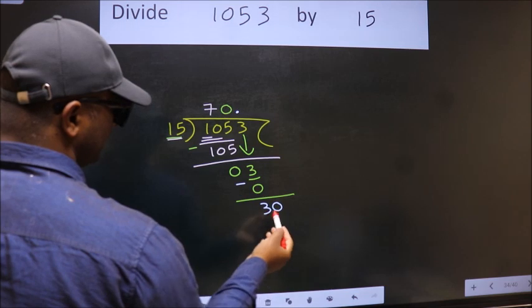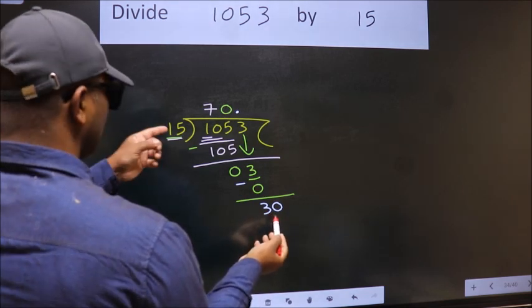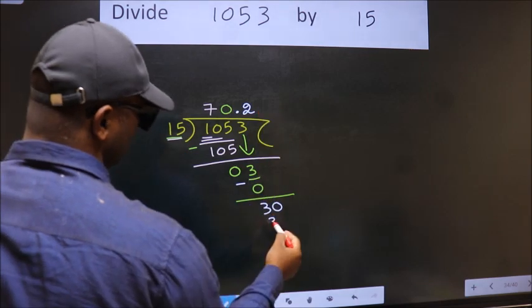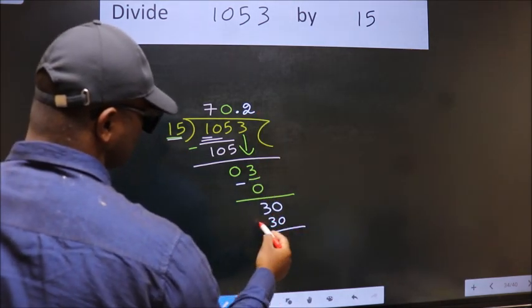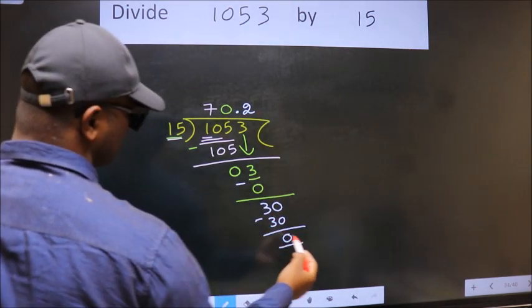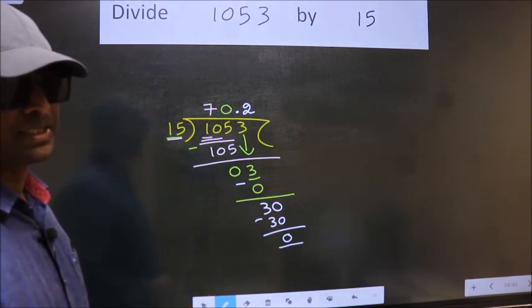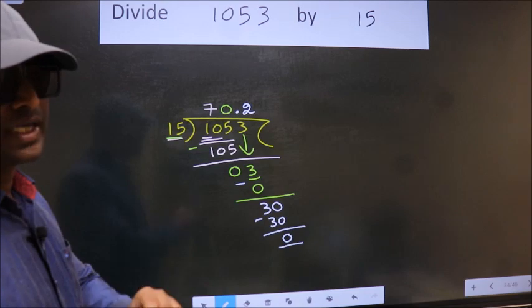When do we get 30 in the 15 table? 15 times 2 is 30. Now we subtract and get 0. Did you understand where the mistake happens? You should not make that mistake.